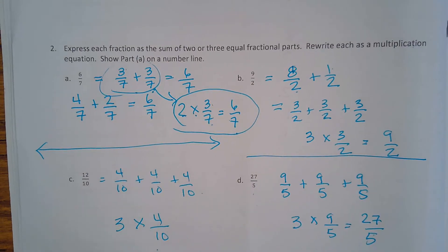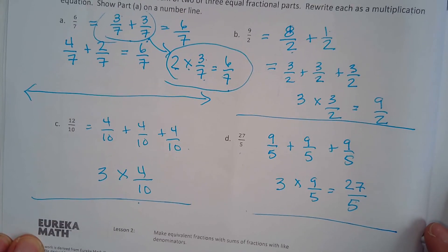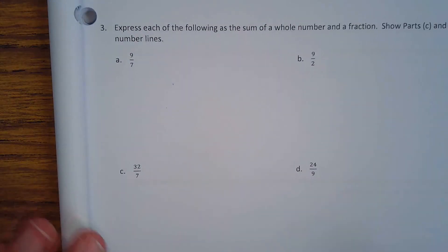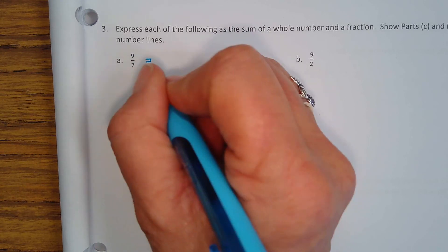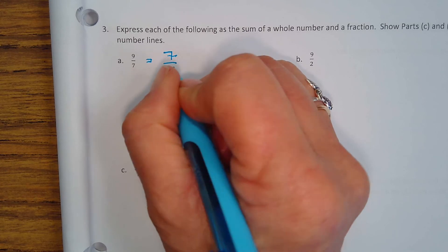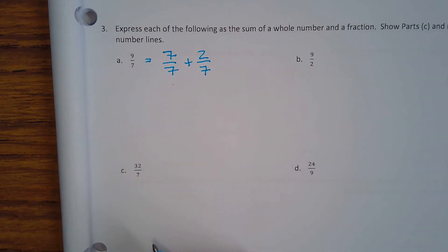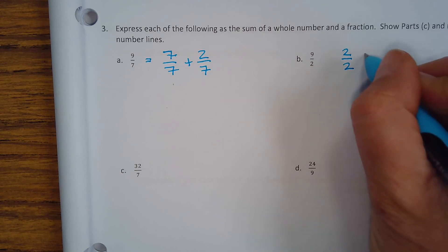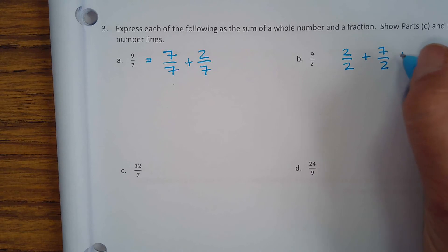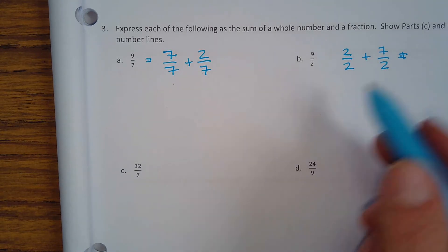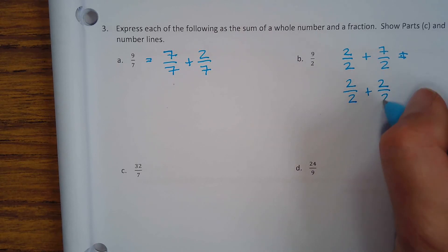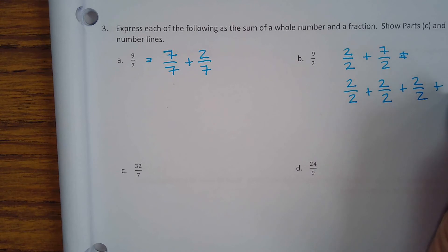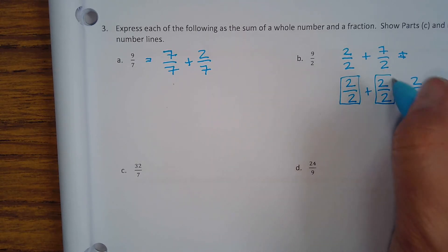Don't forget, you have to draw a number line for each one of those. Then express each of the following as the sum of a whole number and a fraction. What whole number is hanging out in here? If we break this down to seven over seven plus two-sevenths, there's a whole number hiding inside there. Or if we broke this into two over two plus seven over two — how many whole numbers can you find and pull out in here?